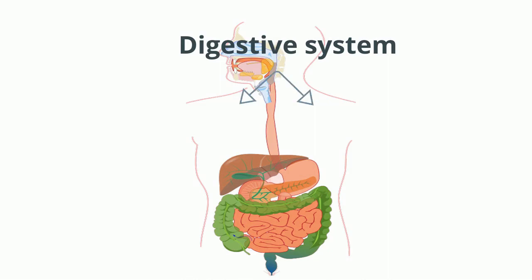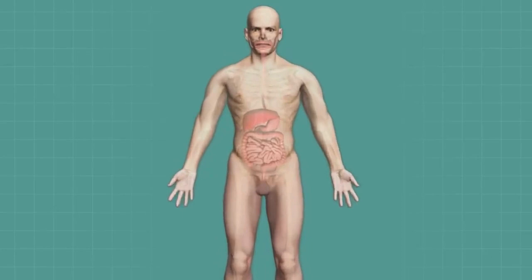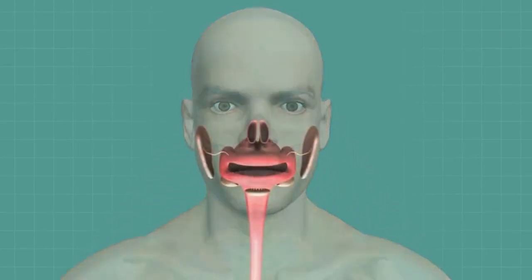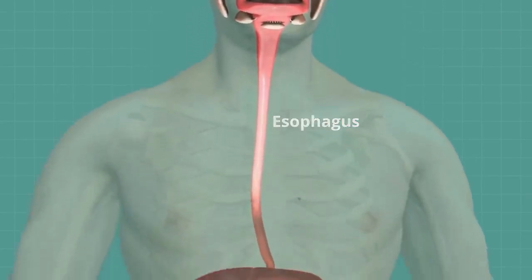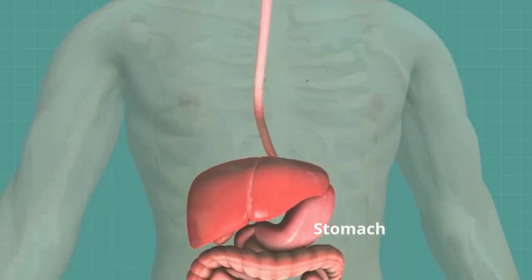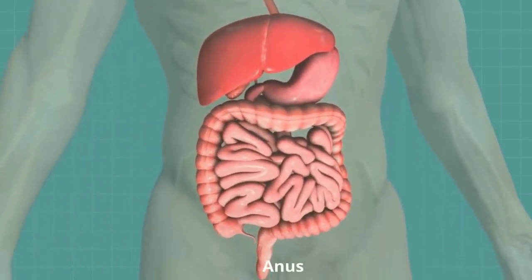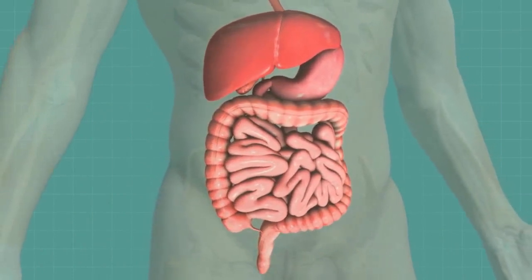Our digestive system consists of two groups of organs: the gastrointestinal tract and accessory digestive organs. The gastrointestinal tract is also called the alimentary canal. This alimentary canal includes the mouth, pharynx, esophagus, stomach, small intestine, large intestine, rectum, and anus. The length of this tract is about 9 meters.